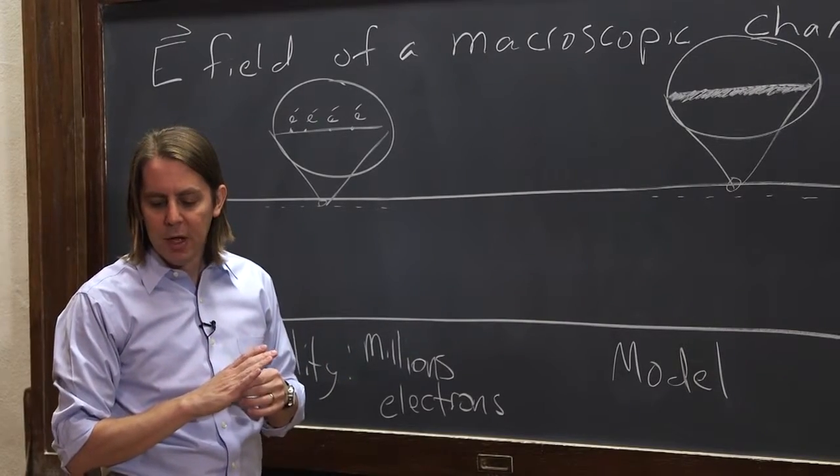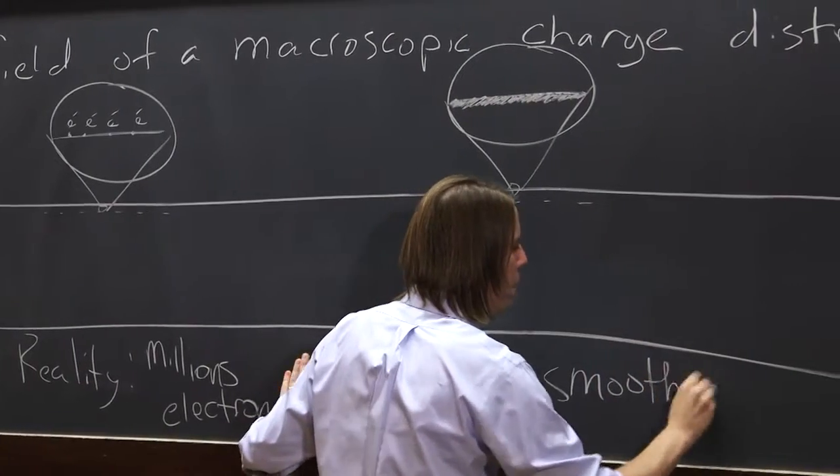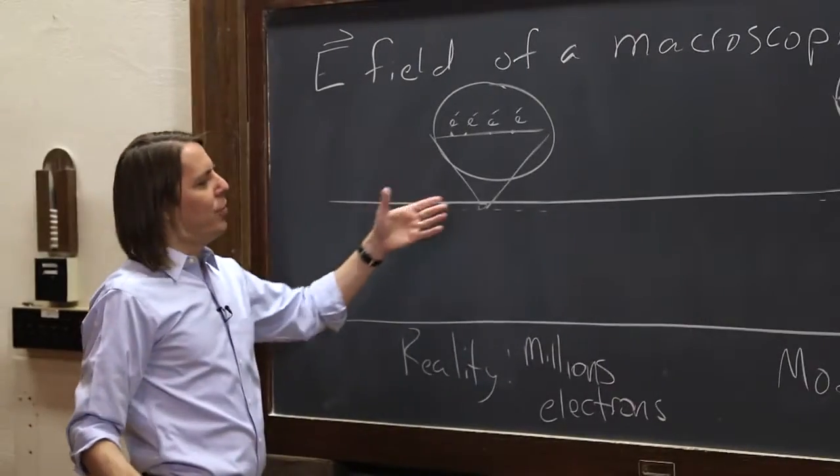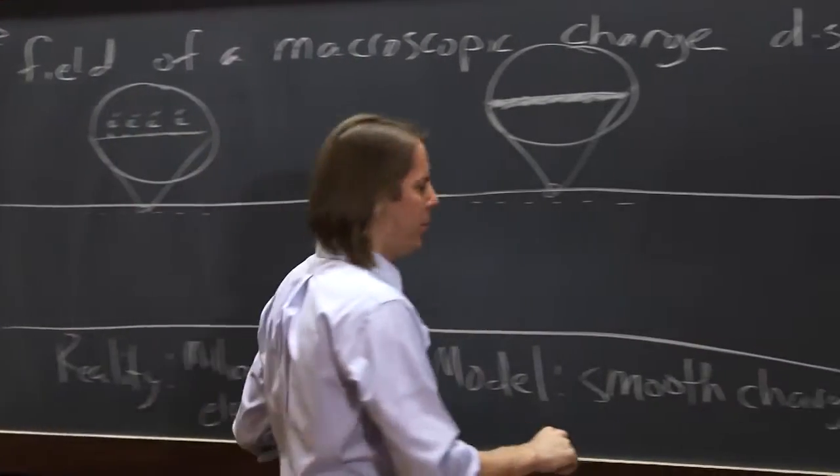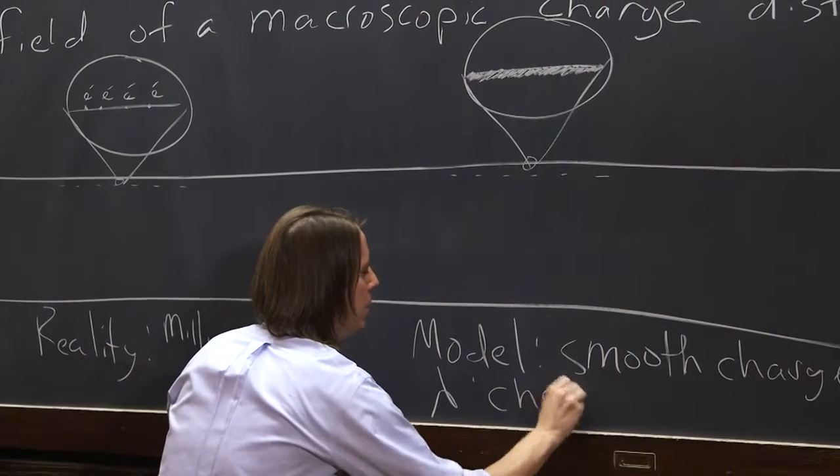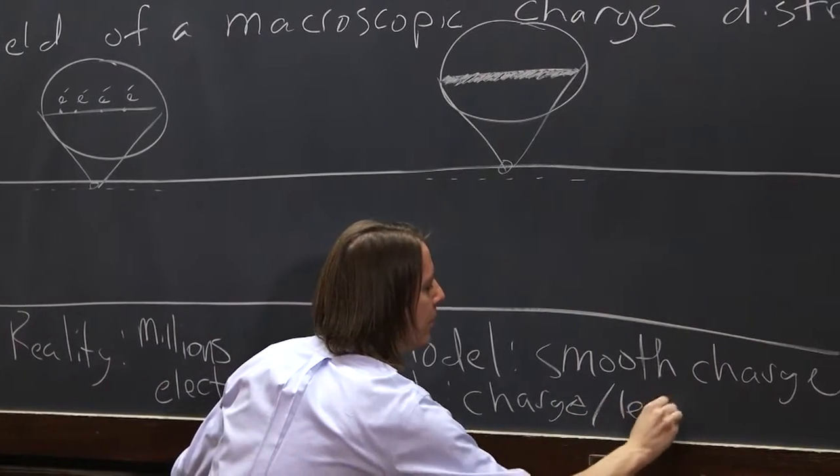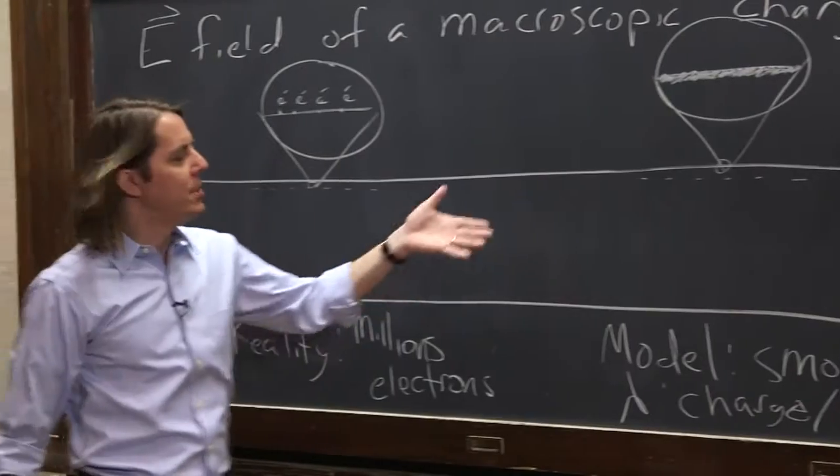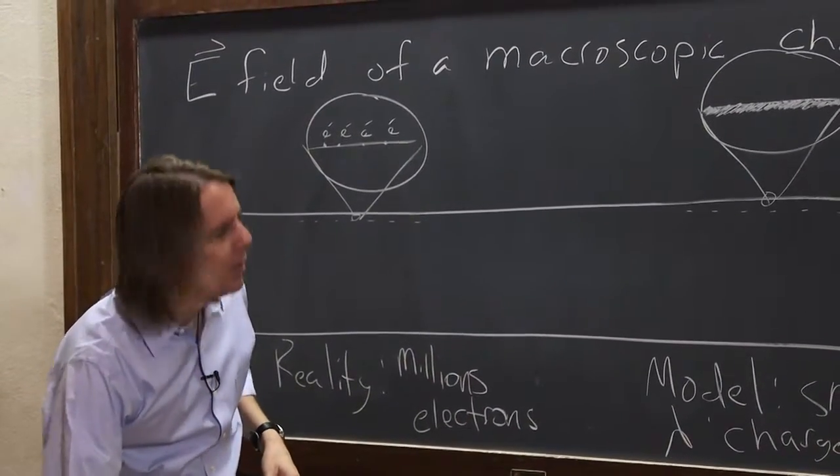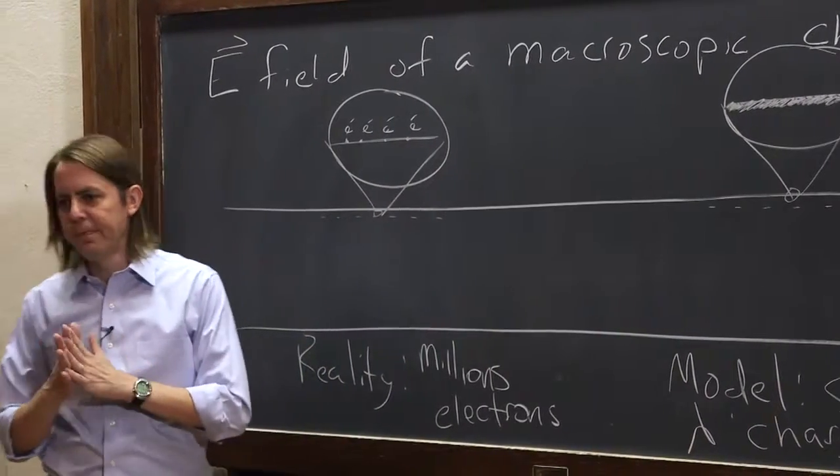So the model is that we have smooth charge, and here you might characterize it with some number of electrons per meter. Here we characterize it with lambda, and lambda is the charge density, or in this case, the charge per unit length, which would be in coulombs per meter. So we're going to use this model and we're going to calculate the electric field of a continuum, of a macroscopic charge distribution.